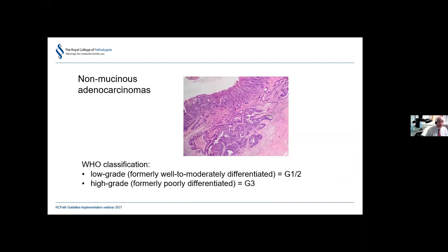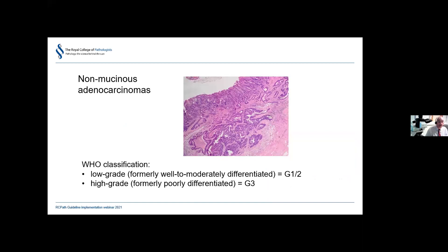Non-mucinous adenocarcinomas of the appendix also occur. Contrary to older literature, they are less common than mucinous neoplasms. They are generally worse prognostically. The WHO classification now follows a two-tier system for these non-mucinous adenocarcinomas: low-grade and high-grade.